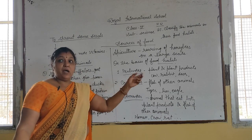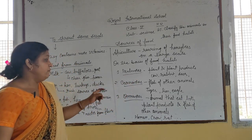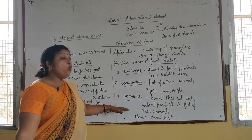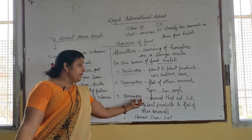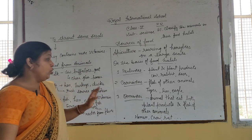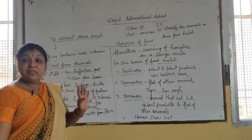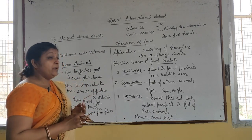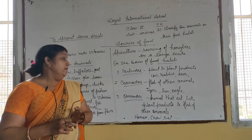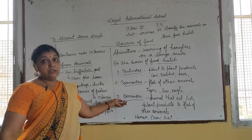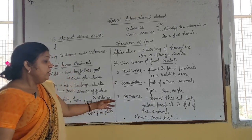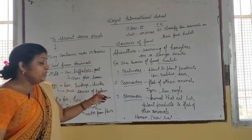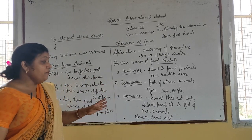The third type is omnivores. Omnivores means animals that eat both plant products and the flesh of other animals. In Hindi, we call them 'sarvahari.' Examples of omnivores are humans, crow, and rat, because they eat both plant products as well as flesh of other animals.